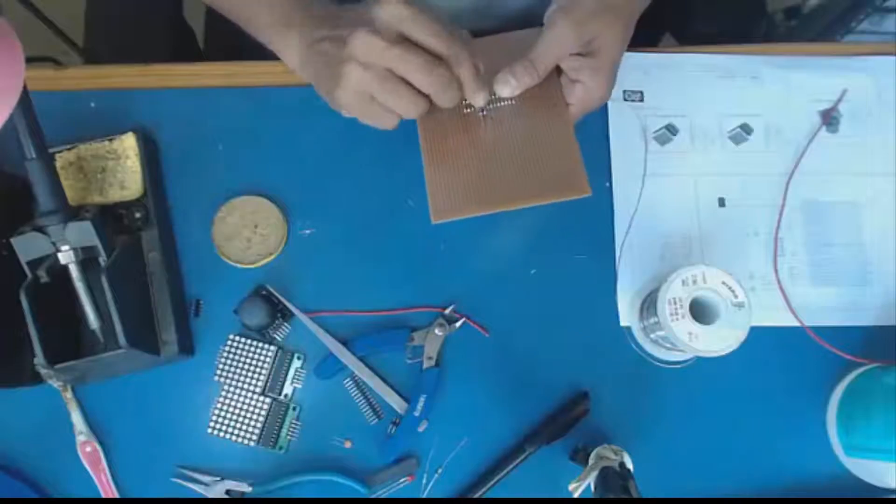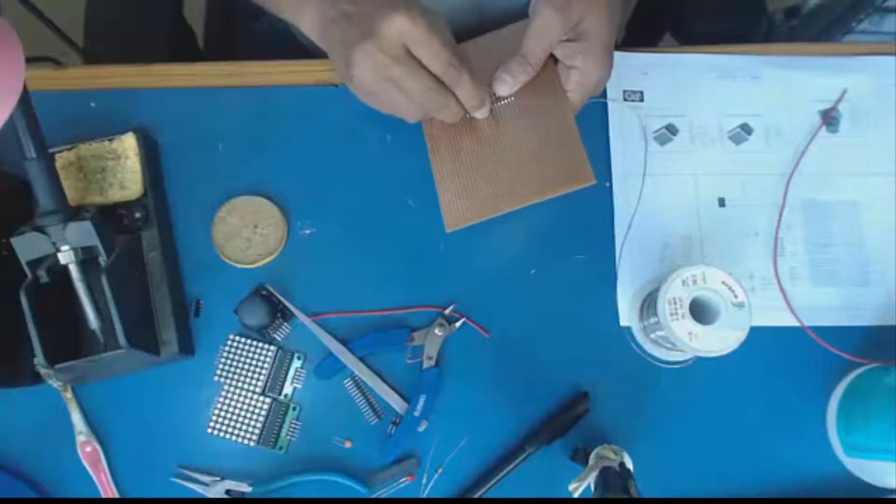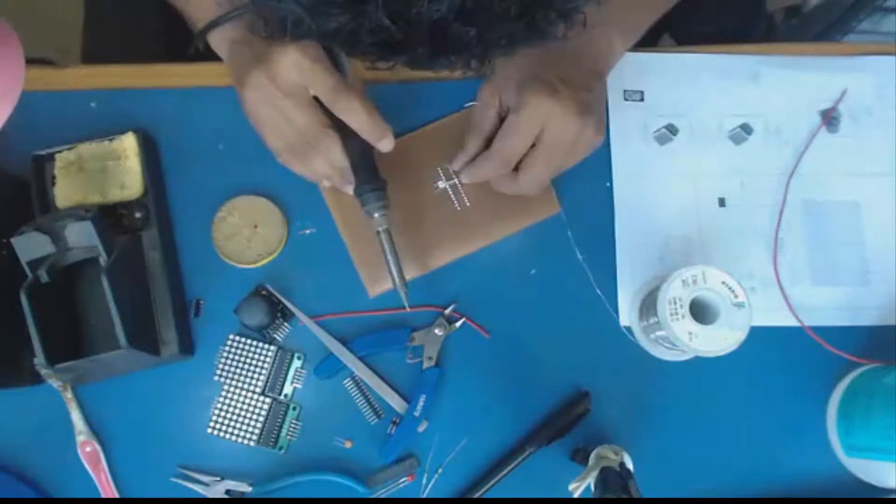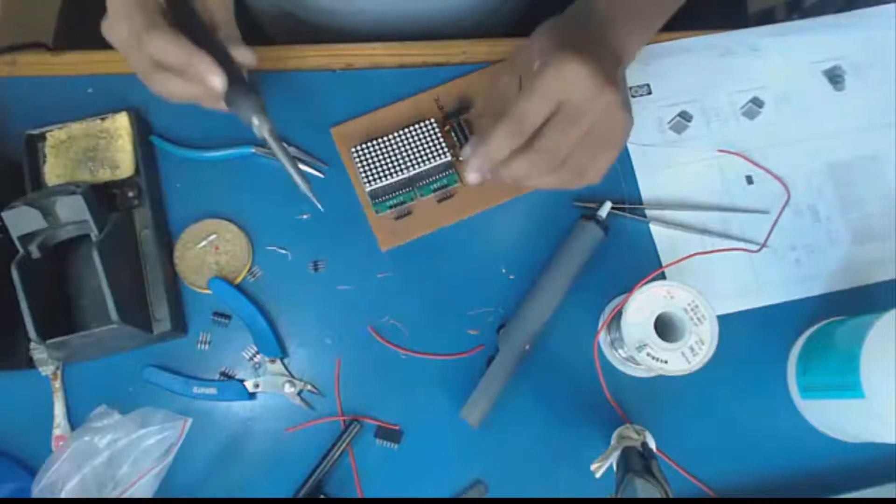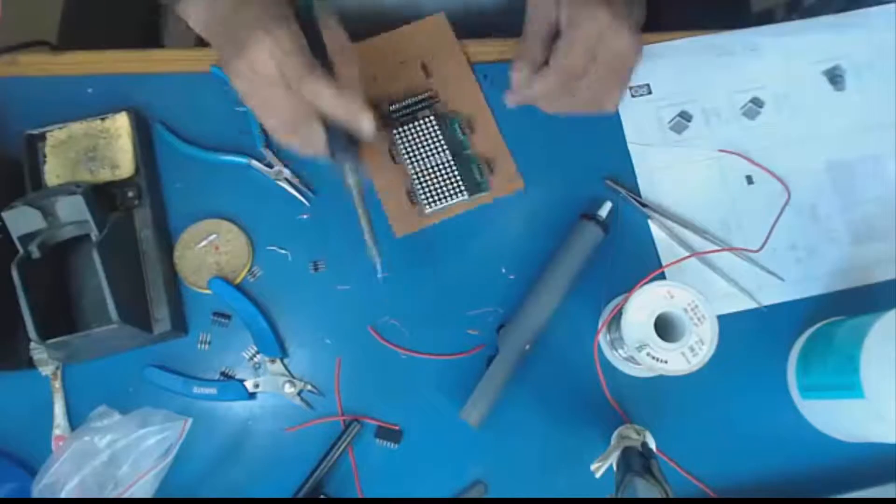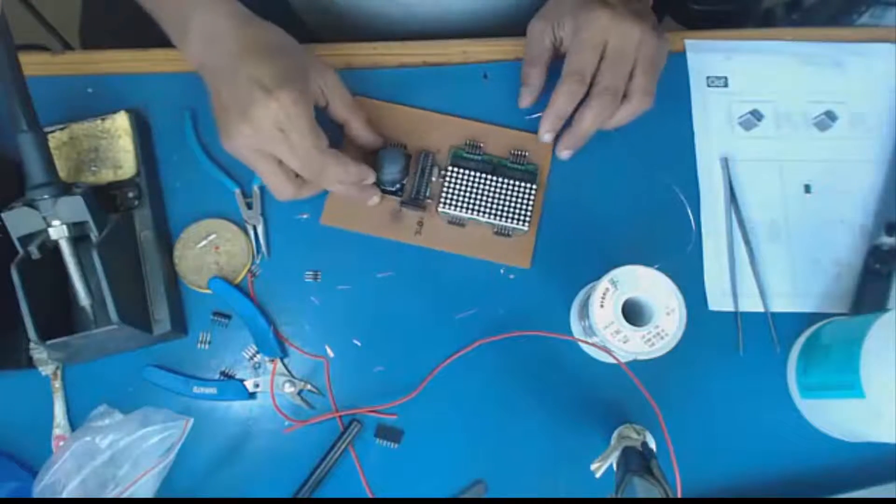Using an IC base prevents the chip from getting damaged from overheating and also gives flexibility to change it later if needed. Then we solder all the other passive components, the displays and finally the joystick.